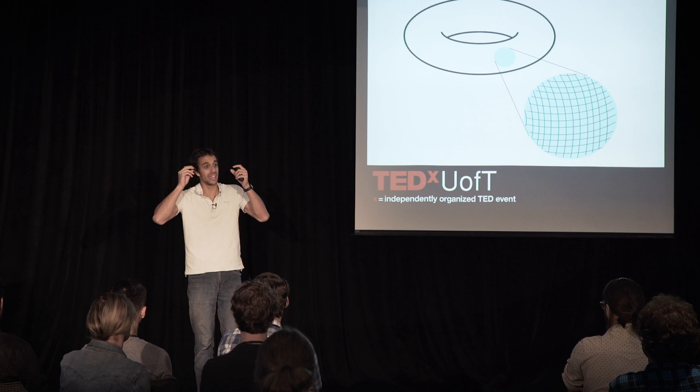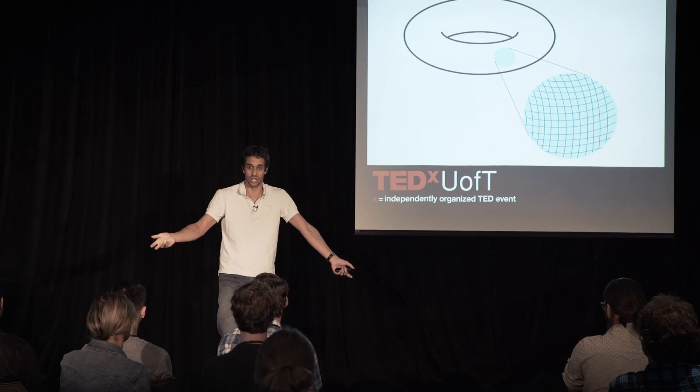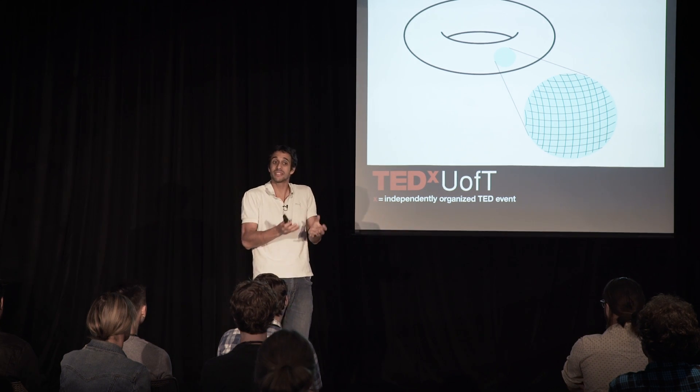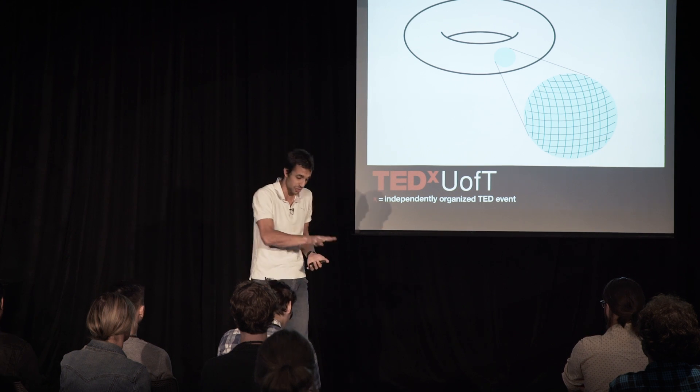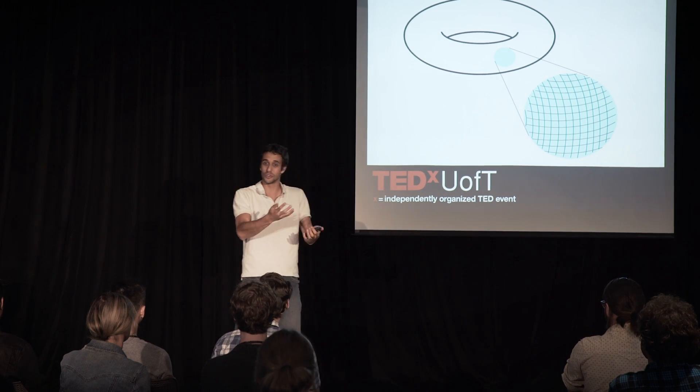Mere mortals like us have a really hard time thinking about what this looks like. But mathematics doesn't care that we grew up in a three-dimensional world and our brains are feeble and can't do this. The mathematics can deal with this, no problem — it's just a fourth coordinate. So which four-dimensional surfaces can exist for a four-dimensional Pac-Man to live on? We don't know. This is one of the most important open problems in topology today, and it's the question that motivates some of the stuff that I work on.